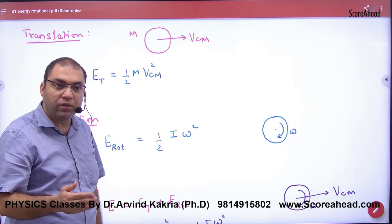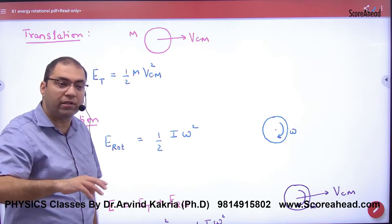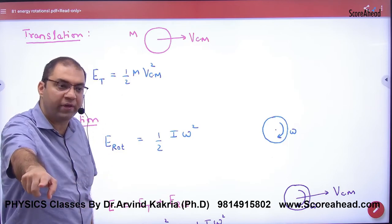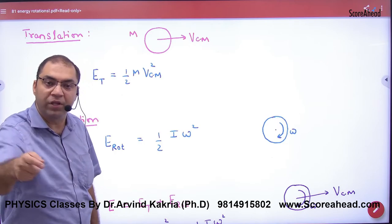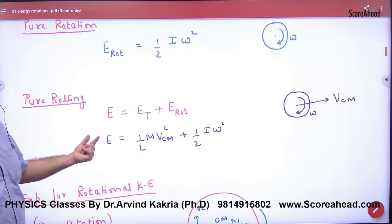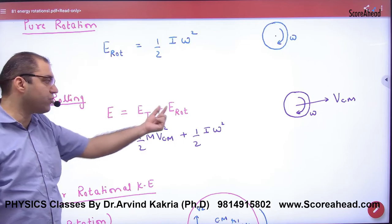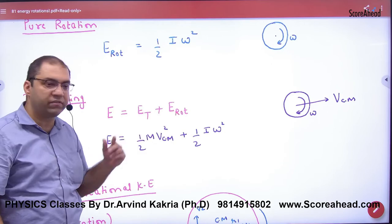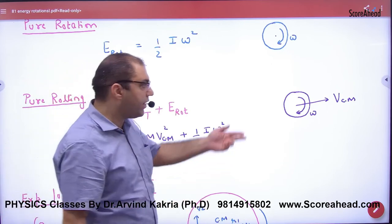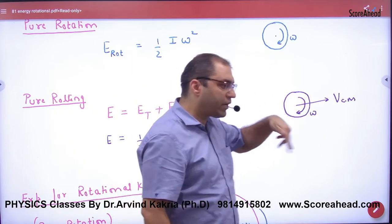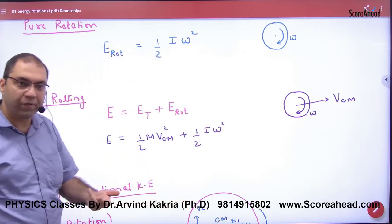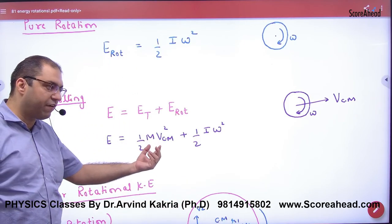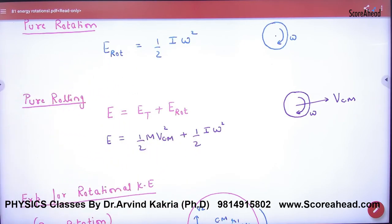And if some body is rolling, it means center of mass is in translation motion and the rest of the particles are rotating. Then what will be total energy? Sum of translation and rotation. Because what was taught? Rolling is a combination of translation as well as rotation. The center of mass is translating and the rest of the particles are rotating. So what will be total energy? Half mv square and half I omega square will be the sum.